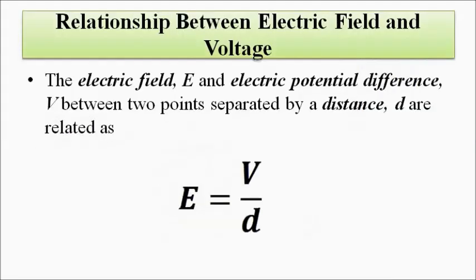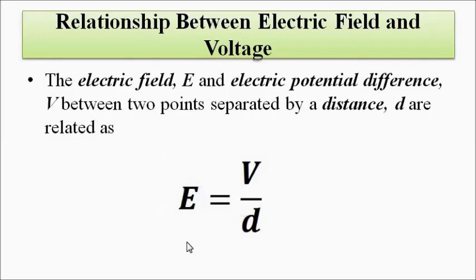We know the relationship between electric field and voltage. The electric field and the potential difference between any two points separated by a certain distance is given by: E, the electric field, equals the electric potential divided by D, the separation distance between the two points. Between any two points, the electric field is given by the potential difference divided by the separation distance. This is the whole concept of the Hall Effect transducer.